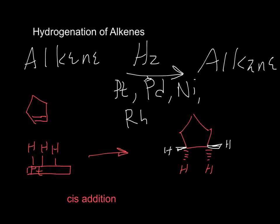The opposite of cis or syn addition is called anti addition, which is important for later on, but we're not doing anti at this point. The next mechanism I want you to know is actually quite simple, and you'll see this same mechanism used over and over again with alkenes. I'll show it with a hydrogen halide — hydrochloric or hydrobromic acid — but you can also use sulfuric, phosphoric, or nitric acid. This is electrophilic addition to alkenes.